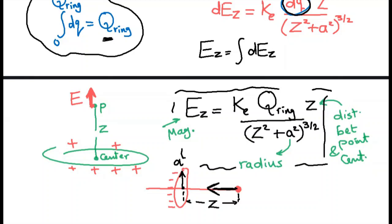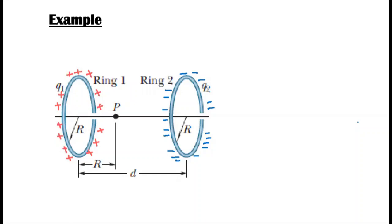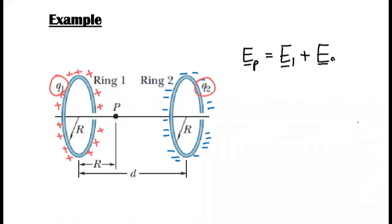Now let's go for an exercise. In this example, I assume we have two rings. Ring 1 is positively charged with total charge Q1 and radius R. Ring 2 is negatively charged with charge Q2 and radius R. It is required to find the electric field at point P, which lies on the common axis of both rings. The total electric field at P is E1 plus E2 — the field due to ring 1 plus the field due to ring 2.